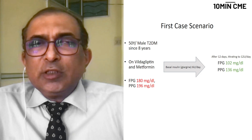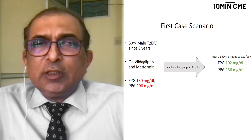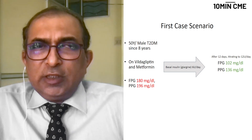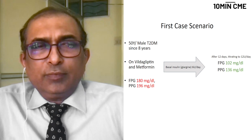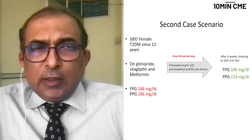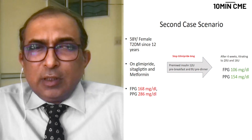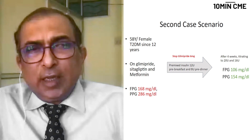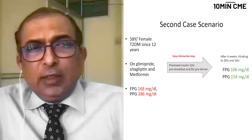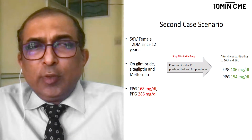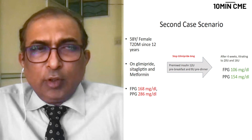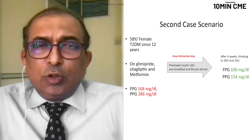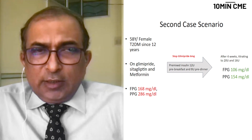He had reached the glycemic targets defined for him, with a dose of 12 units of Lantus along with the oral antidiabetic drugs he continued to use. We see that with a single dose of basal insulin, he could achieve the glycemic target. Coming to the other patient, both her fasting and post-prandial glucose levels are high, and she is a type of patient who is not going to be controlled with just basal insulin, because her post-prandial glucose also needs to be addressed.